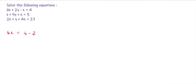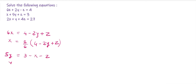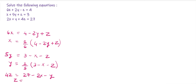We rewrite the equations in x, y, z form. The first equation gives x = (1/6)(4 − 2y + z). The second gives y = (1/5)(3 − x − z). The third gives z = (1/4)(27 − 2x − y). With these three equations ready, we start the first iteration.